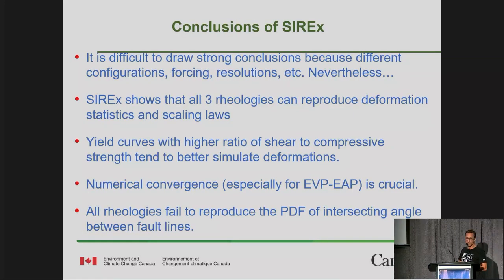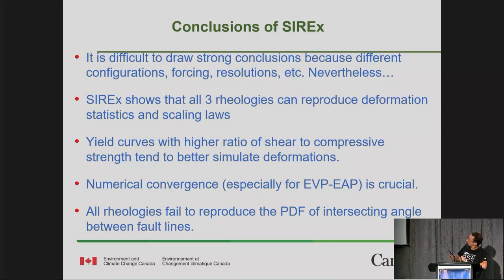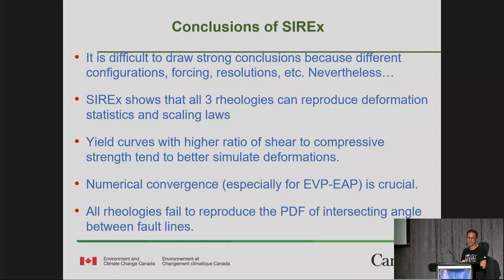However, it's a bit difficult with CIREX to draw strong conclusions because these are very different models, with different forcing, different resolution, and different configurations — so it's hard to attribute differences to specific causes. Nevertheless, a few conclusions came out. Despite what was claimed in some papers, it seems that all three rheologies can reproduce deformation statistics and scaling laws, so maybe we need different metrics to compare them. Also, yield curves with a higher ratio of shear to compressive strength tend to better simulate deformation.